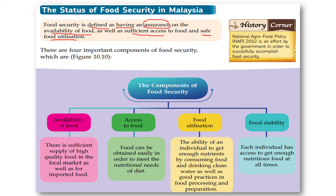There are four components of food security. The first is availability of food, meaning there is a sufficient supply of high-quality food in the local market as well as from imports. The second component is access to food, where food can be obtained easily to meet nutritional needs. The third component is food utilization — the ability of an individual to get enough nutrients by consuming food and drinking clean water, along with good practices in food processing and preparation.